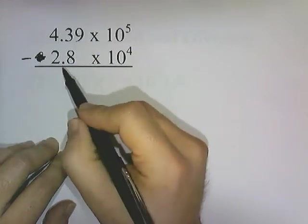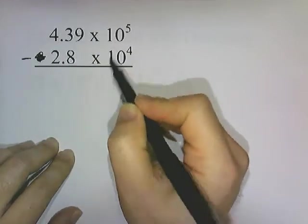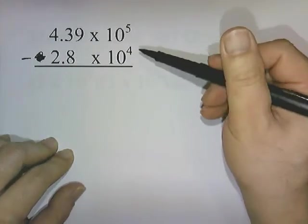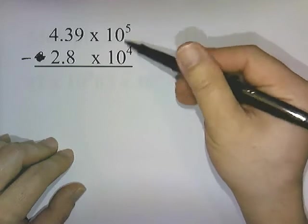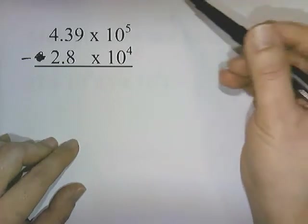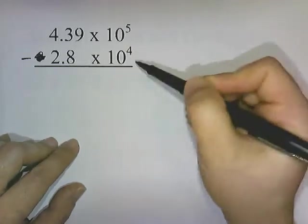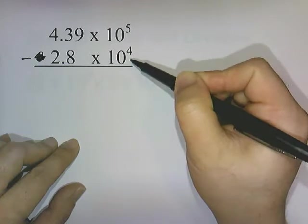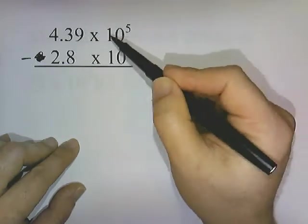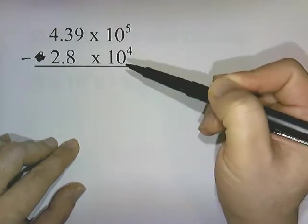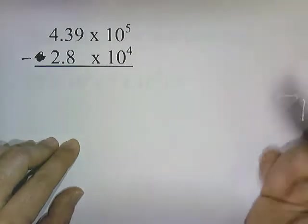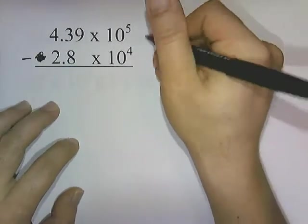Same thing with subtraction — here's a subtraction example: 4.39 minus 2.8 times 10 to the 4th. We can't do anything until they're both at the same power of 10. So we can convert this number to make it something times 10 to the 5th, or convert this number and make it something times 10 to the 4th.